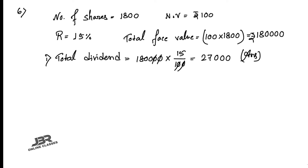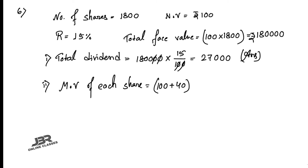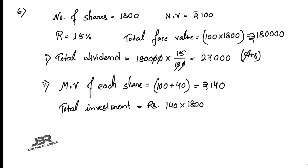Next, if she bought these shares at 40% premium — that means above face value — the market value of each share = 100 + 40 = ₹140. So total investment = 140 × 1800 = ₹2,52,000.